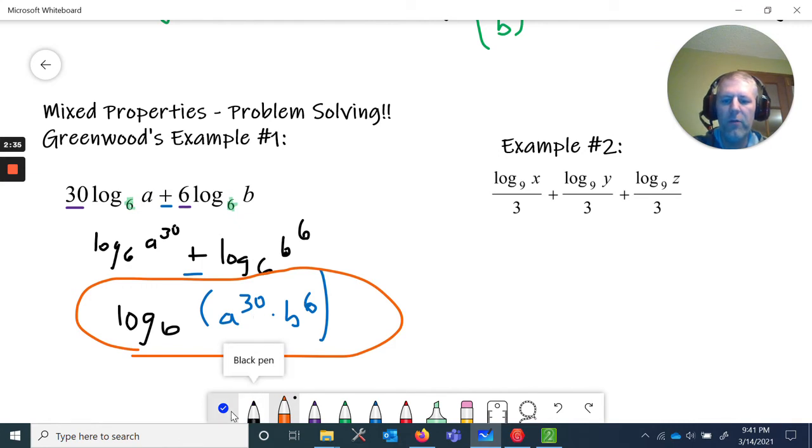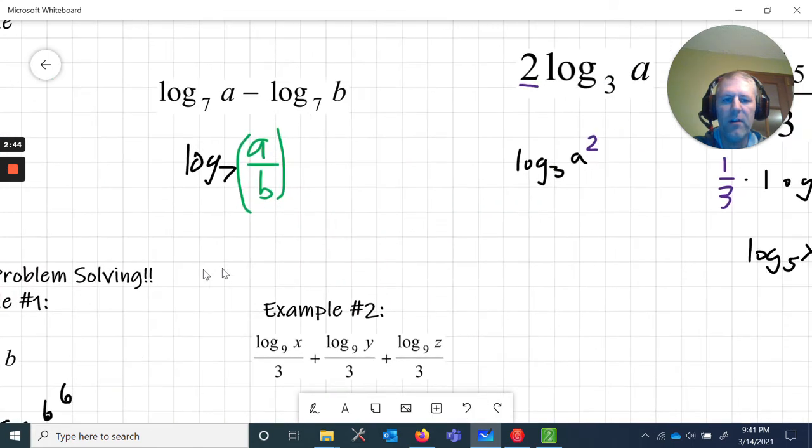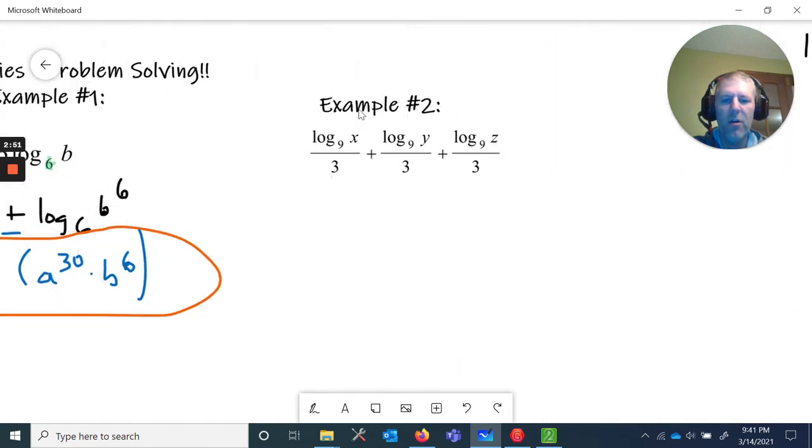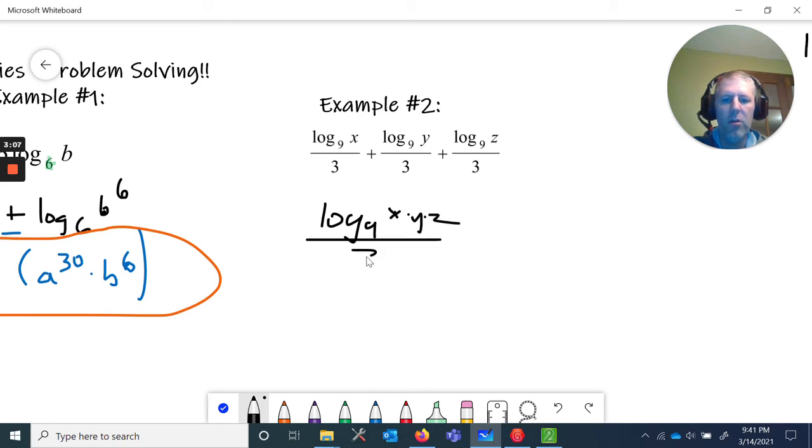Okay, so there is a condensed version of this. So we did a power rule and then we did a product rule. So let's take a look at this one. We've got another that you might think is quotient, but since we're dividing by three here in this last example we talked about, dividing by three is actually one third times. So what that means is these are all going to be to the one third power. So when I look at this one, I've got a one third, a one third, a one third, so I'm just going to rewrite this real quick as log base nine of x times y times z all over three.